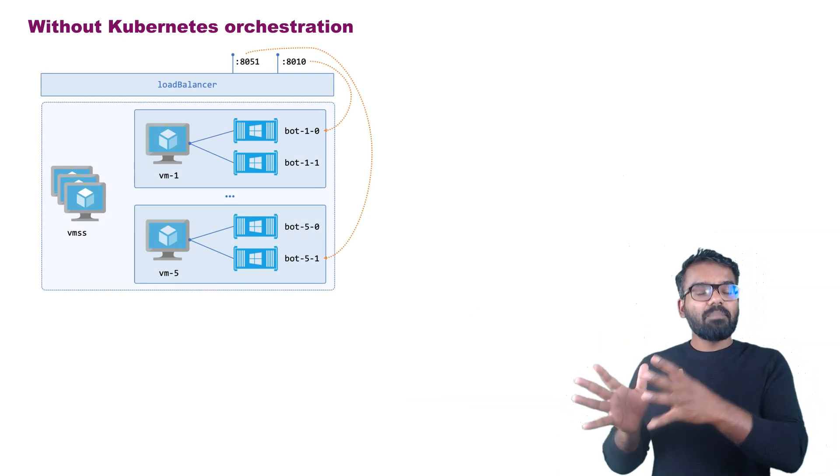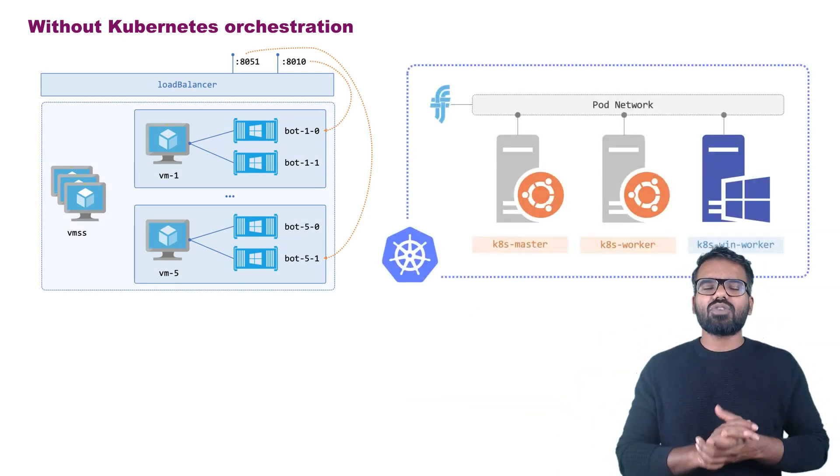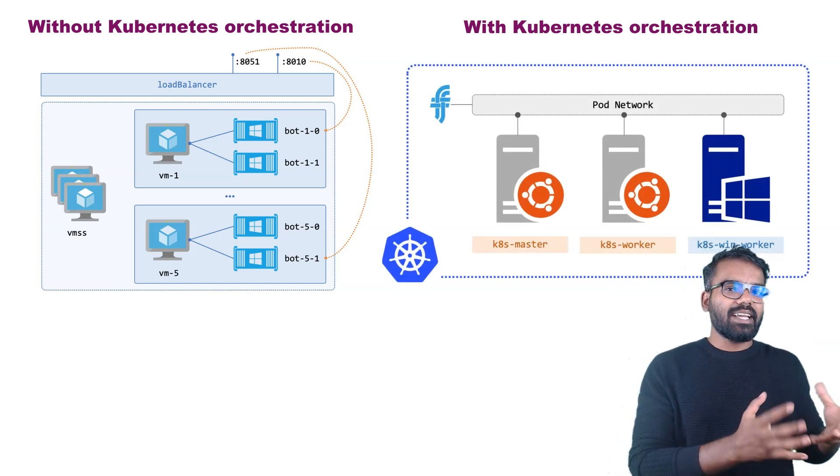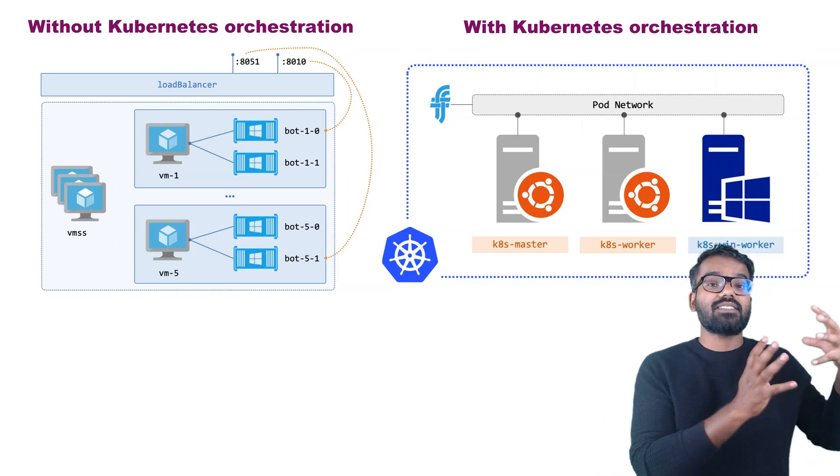Before getting into the difference between version 2 and version 3, let me cover some Pega deployment models on cloud. You can have two ways of deployment: VM-based deployments, where you choose a VM and deploy your applications on it, or Kubernetes-based deployments, where containers are orchestrated using Kubernetes. Kubernetes handles a lot of features, including scalability — you can bring servers up when load increases and bring them down when load decreases.